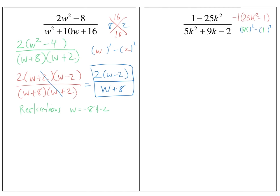The bottom needs to be factored and there's no GCF. The edges are not perfect squares, so I multiply the front and back coefficients: negative 10. I need two numbers that multiply to get negative 10 and add to get 9 — that's 10 and negative 1. So I keep the 5k², replace the 9k with 10k minus 1k, giving four terms. Those two numbers replaced the 9k as two pieces.